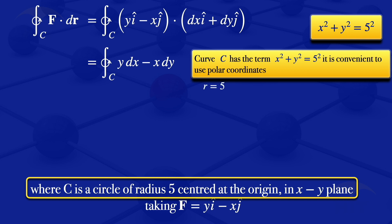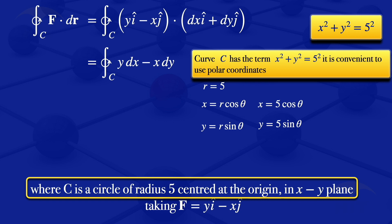Our radius is 5. Using polar coordinates, x equals 5 cosine theta and y equals 5 sine theta. From the x equation, we can find the derivative of x with respect to theta, and it will be minus 5 sine theta. This is a circle and we are moving in the positive direction, so theta will vary from 0 to 2π.